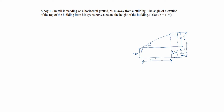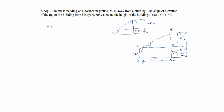We need to calculate this value — 1.7 plus x — that is the height of the building. Now let's draw it again as a triangle. The boy is standing here, this is 1.7 meter, this is also 1.7 meter, and this one we don't know. So we need to calculate this value: 1.7 plus x. We can label the points A, B, C, D and now consider triangle EAD.